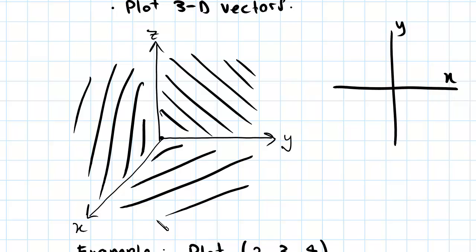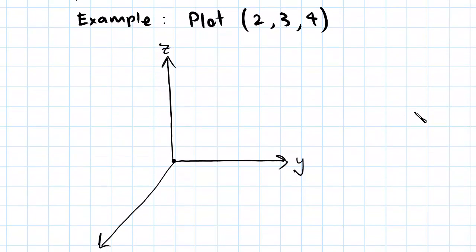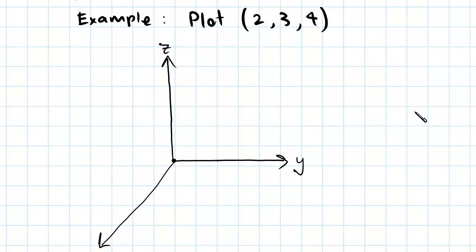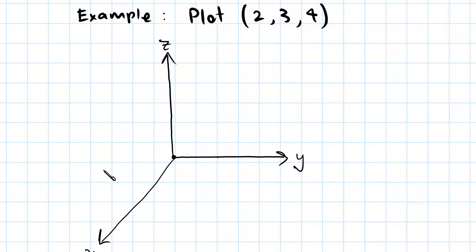Now we'll move on to an example where we plot a 3D vector. We've been asked to plot a point which is (2, 3, 4). What this means is it's 2 in the X direction, 3 in the Y direction, and 4 in the Z direction.